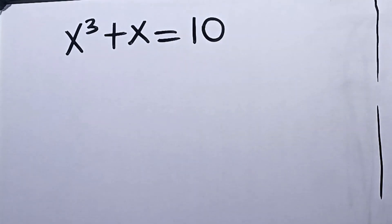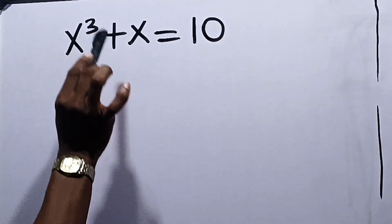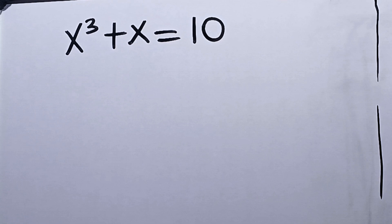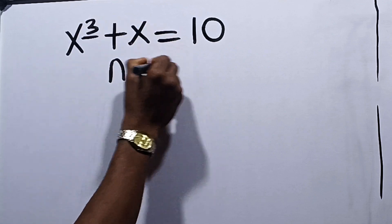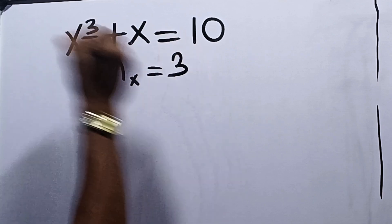Let's solve this one together. It says x cubed plus x is equal to 10, and we're going to solve for the values of x. First thing you need to notice is that the number of answers for x equals the highest power of x. The highest power of x here is 3, so the number of answers for x will be equal to 3.